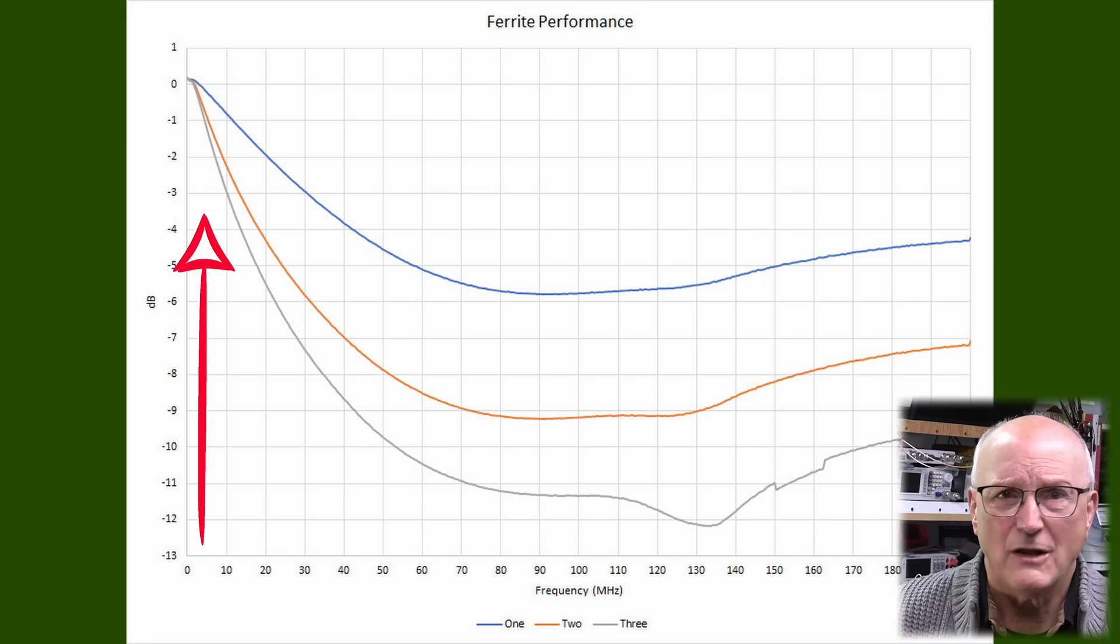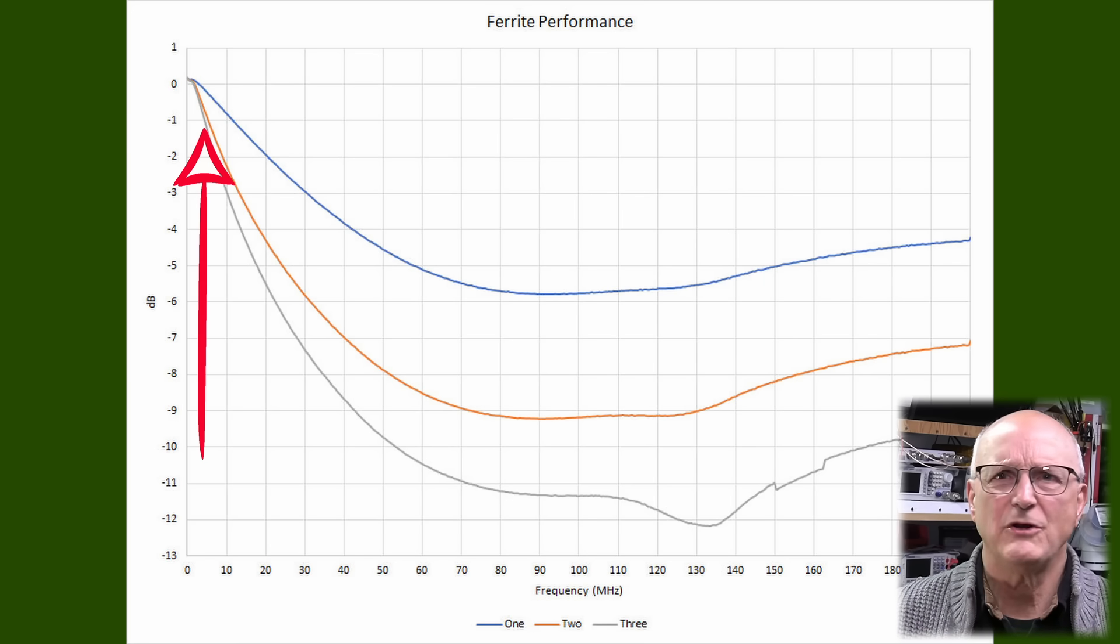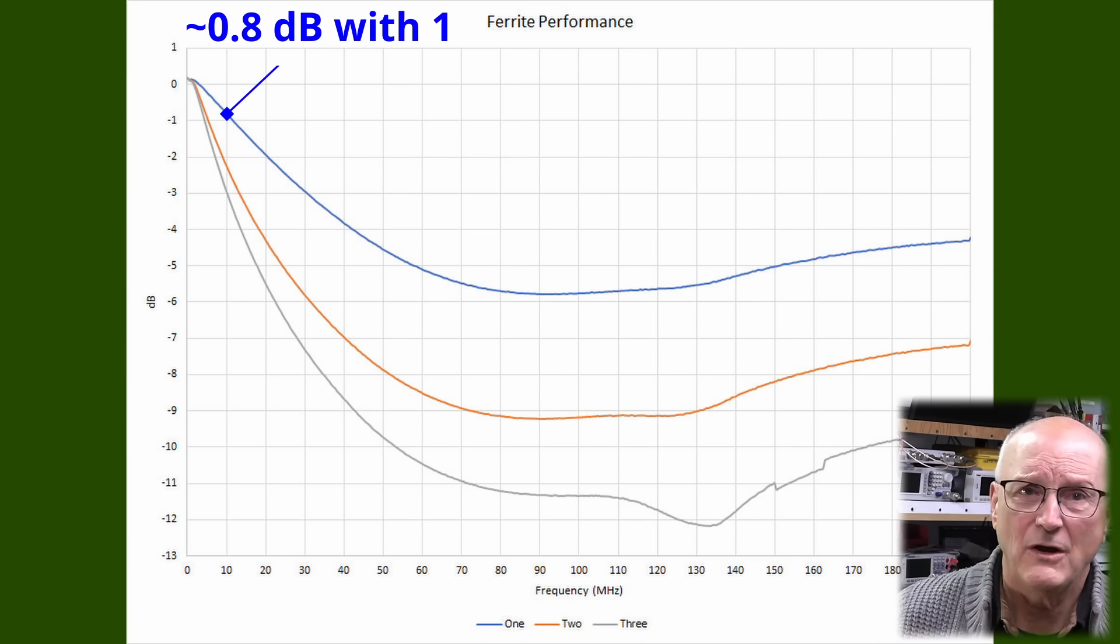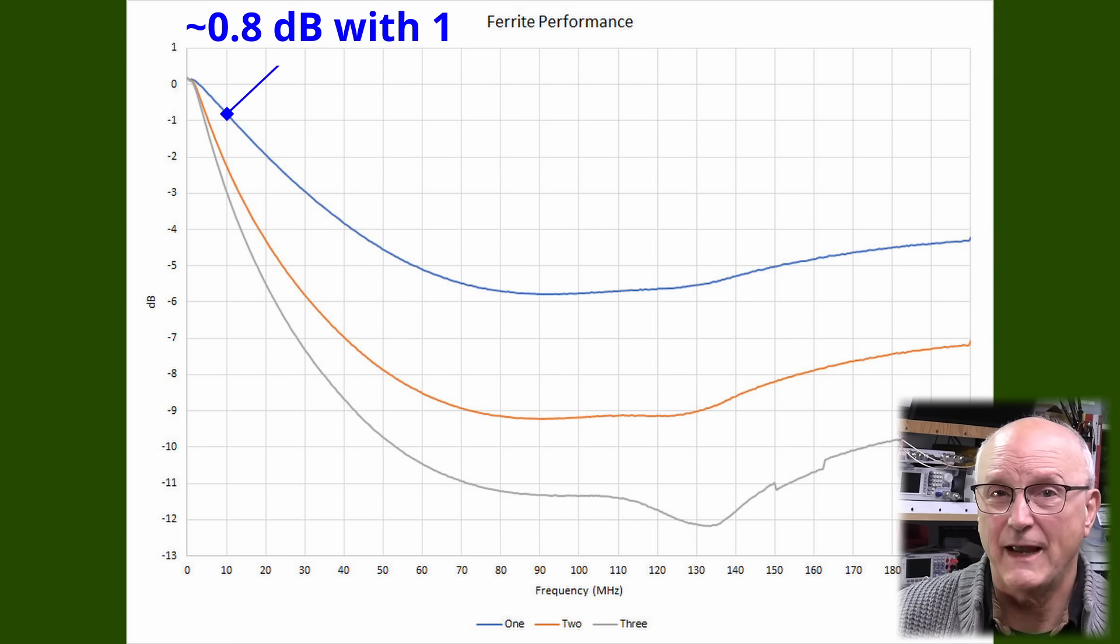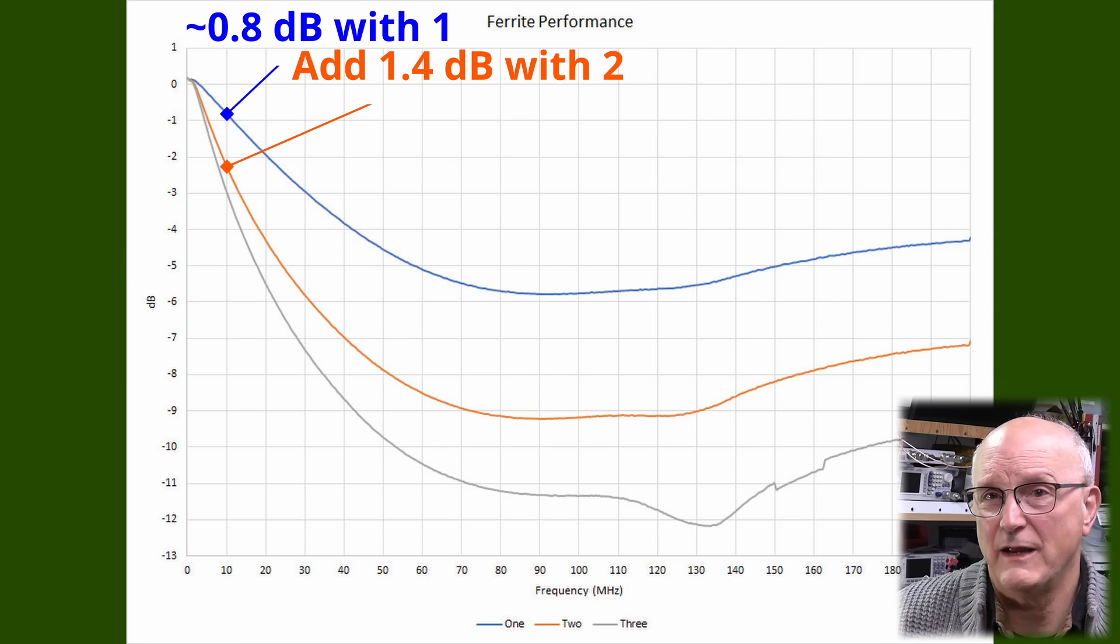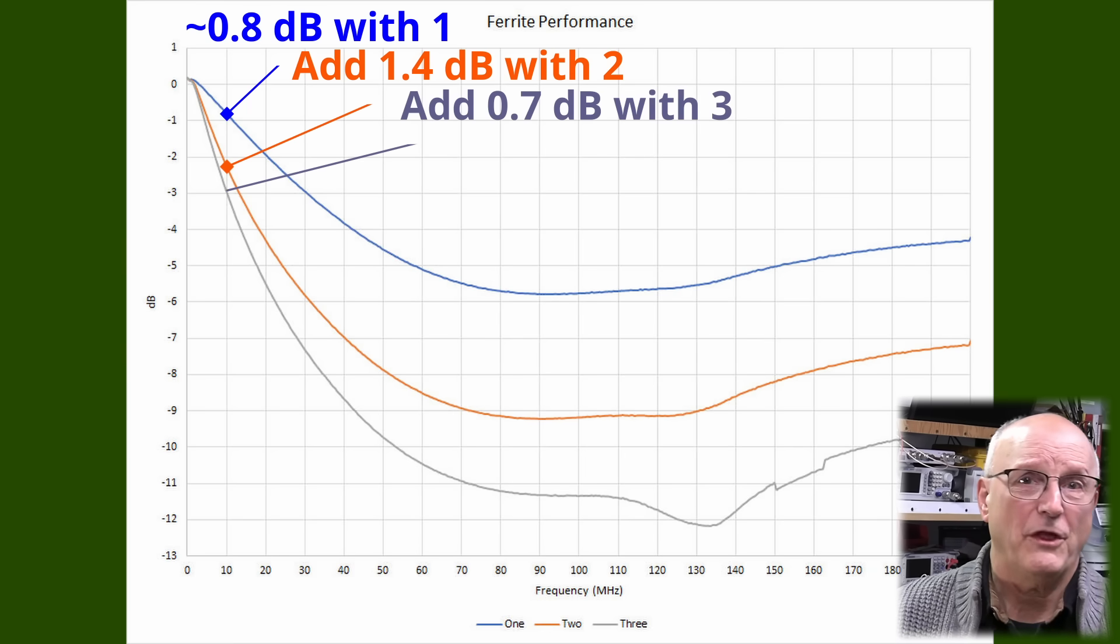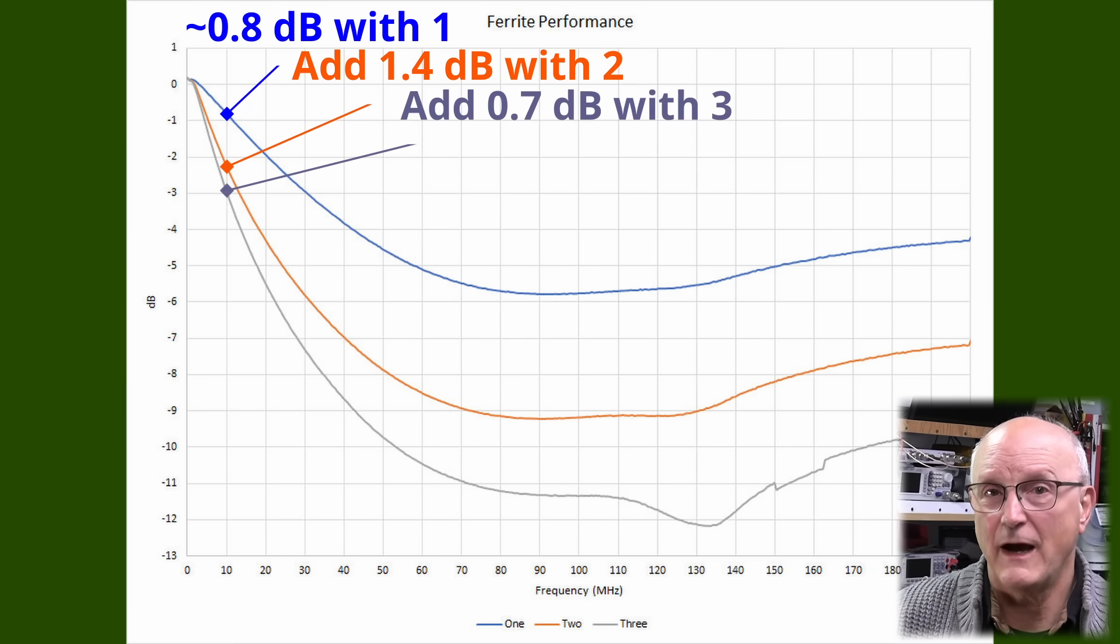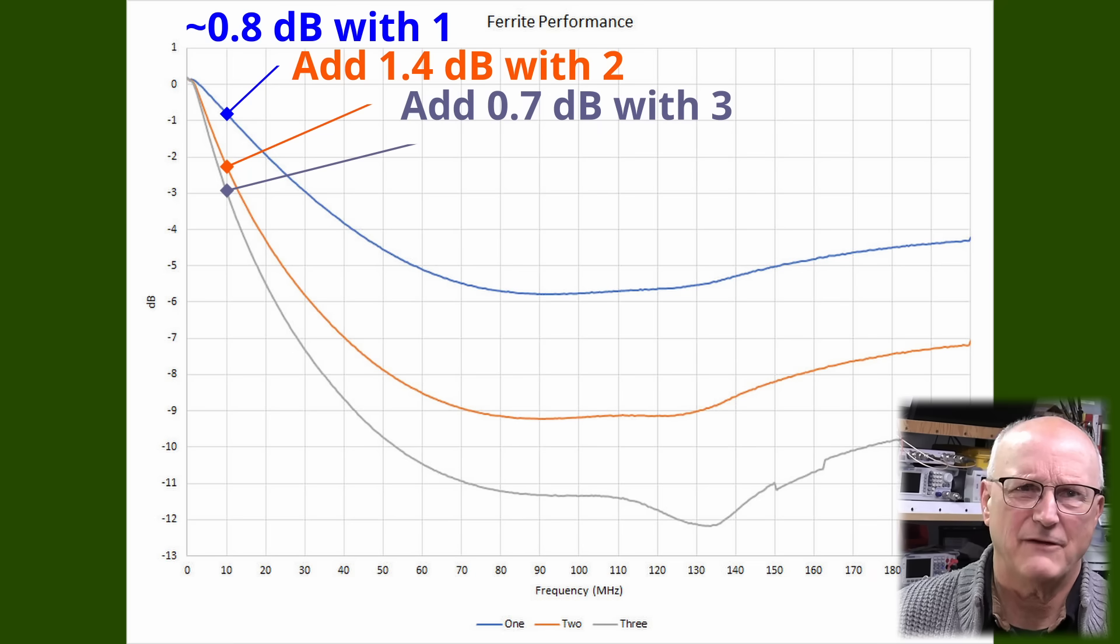Notice too that at lower frequencies, there was nearly no benefit at all. At 10 MHz with one, we only saw 0.8 dB of help. Add another one and we get 2.2 dB, an increase of 1.4 dB. With the third, we got 2.9 dB, an addition of a measly 0.7 dB.